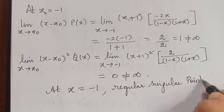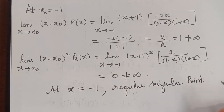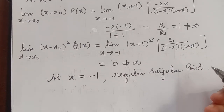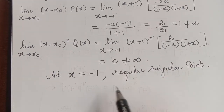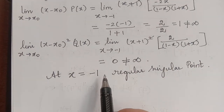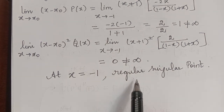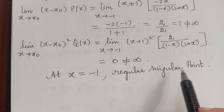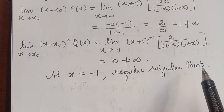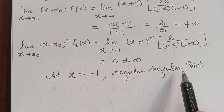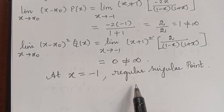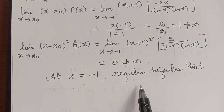Therefore, we have two singular points, x equal to 1 and x equal to negative 1, both of which are regular singular points. We have discussed the nature of the singular points. Hope you have understood this problem. Thank you.